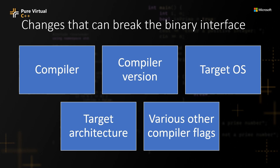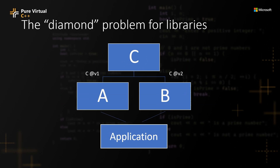It gets even more complicated when you have a few different dependencies. So you want to add libraries A and B to your project, but unbeknownst to you, A and B both depend on library C. Now you would need to also get library C, and you better hope that A and B don't expect different versions of C, because then you can't combine these together. You would need to pick a version of A and a version of B that require the same version of C to avoid what we call the diamond problem. That's because in C++, you can't request two different versions of the same library in the same build graph.